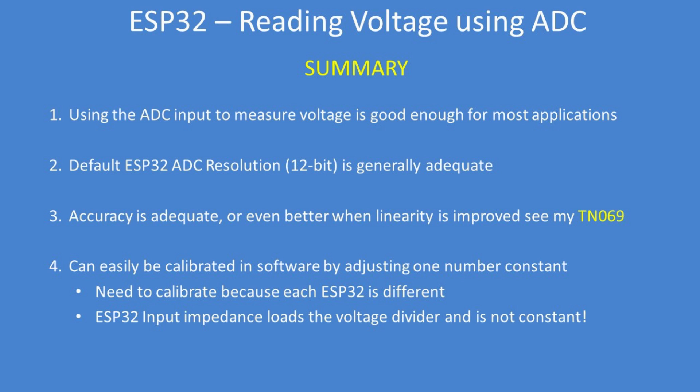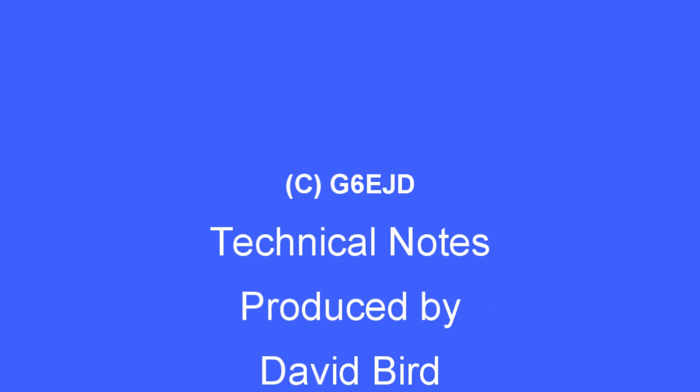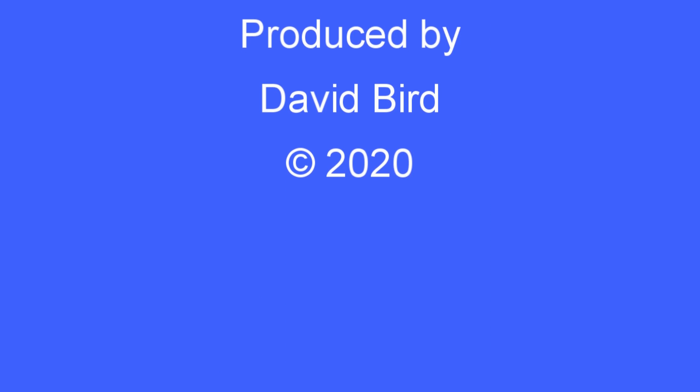Use a reasonably accurate DVM for calibration. The ESP32 input impedance does load the voltage divider and is not constant, so the only option is to compensate in software for the ADC's limitations. I hope you found this technical note interesting and useful.